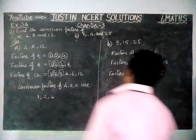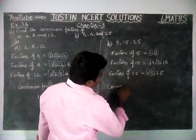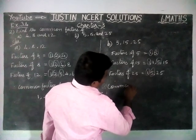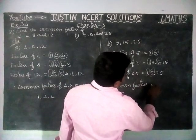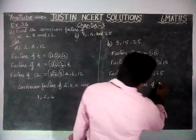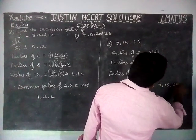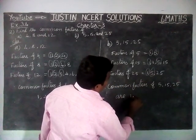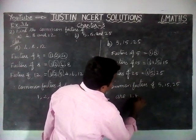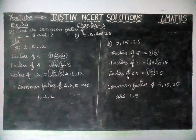Therefore, common factors of 5, 15, and 25 are 1 and 5. 1 and 5 are the only common factors of 5, 15, and 25.